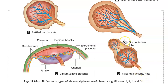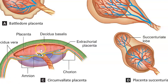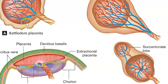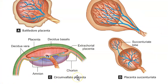There is also circumvallate placenta and placenta succenturiata. In circumvallate placenta, the fetal membranes fold backwards around the edge of the placenta. Here the chorion is marked in blue, and you can see that mixing of maternal and fetal exchange is not happening properly, leading to decreased nutrients to the baby. Circumvallate placenta comes under placenta extrachorialis, which includes circumvallate placenta and placenta marginata.